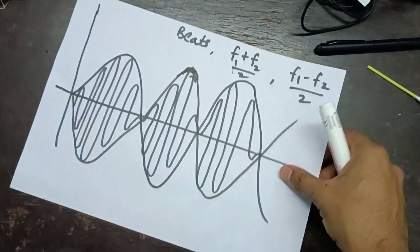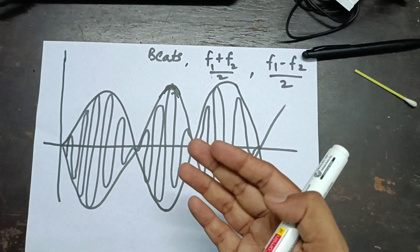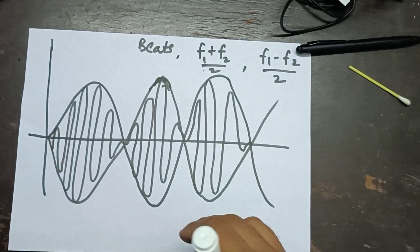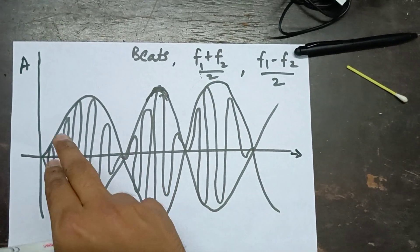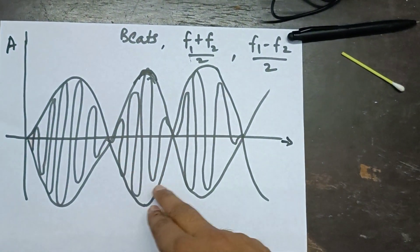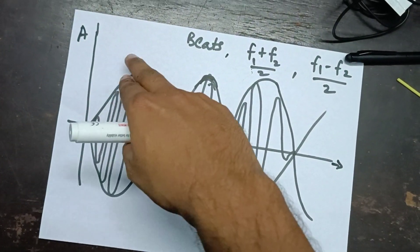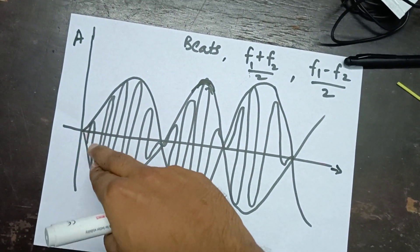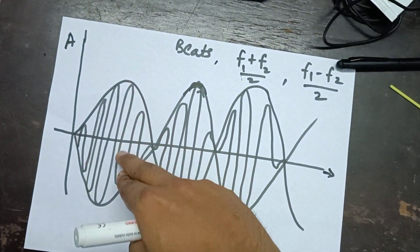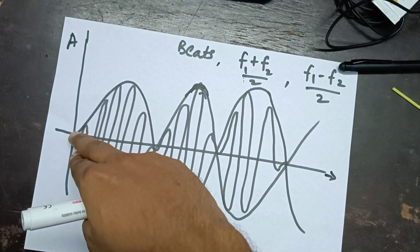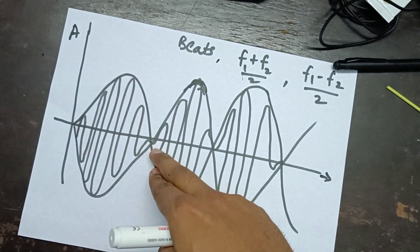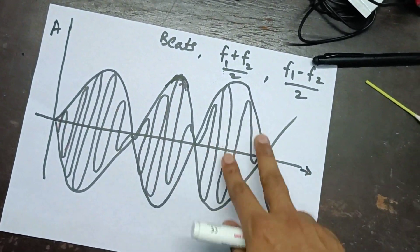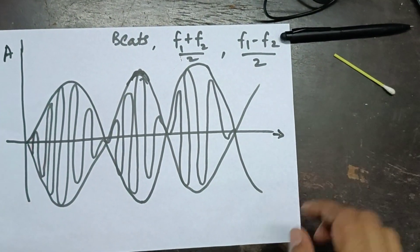The third thing is the beats phenomenon. In the beats phenomenon we generally see this type of graph — amplitude versus time. We can see it is sinusoidal with a sinusoidal envelope, and inside there is a wave. The amplitude starts from zero, increases inside the envelope, then gets decreased, then again increases and then decreases. The same thing we are seeing in the video.